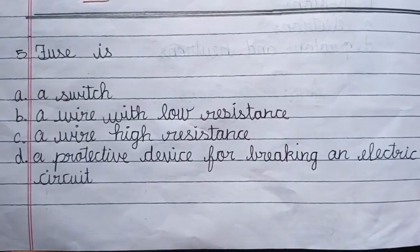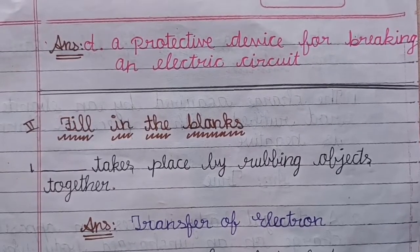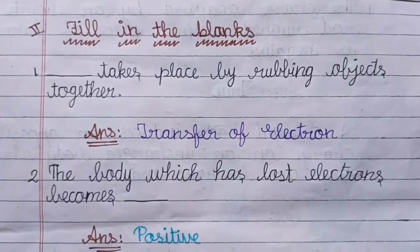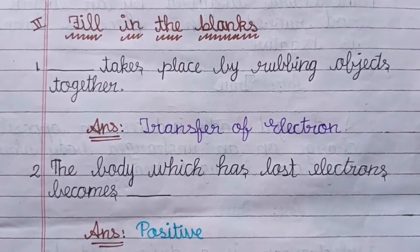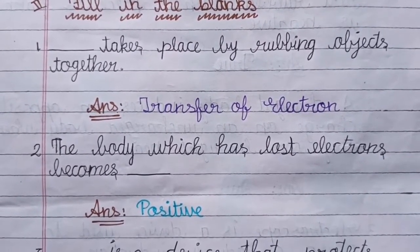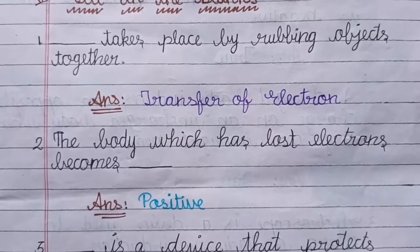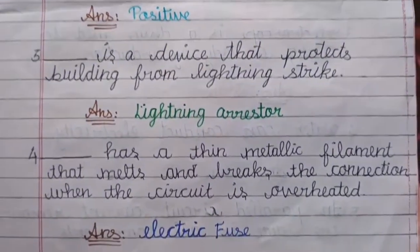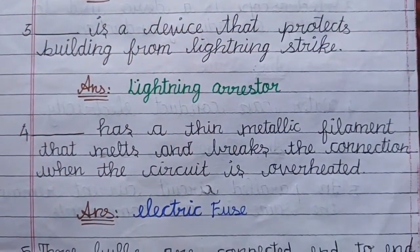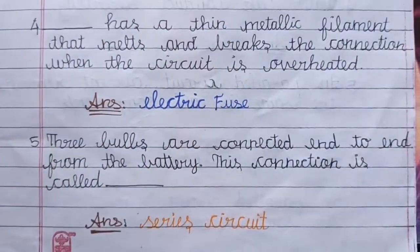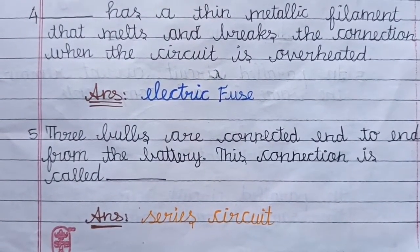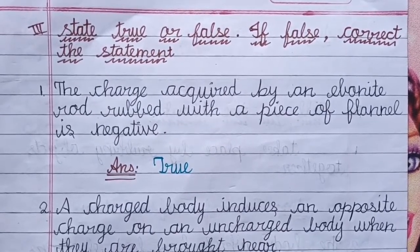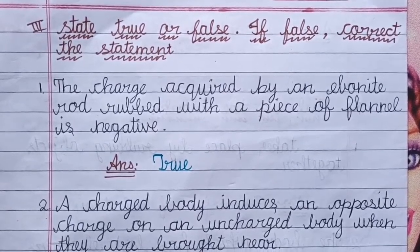Question No. 5, Answer: D — Predictive Device for Breaking an Electric Circuit. Promo Letter 2: Fill in the Blanks. Question No. 1, Answer: Transfer of Electrons. Question No. 2, Answer: Positive. Question No. 3, Answer: Lightning Arrestor. Question No. 4, Answer: Electric Fuse.